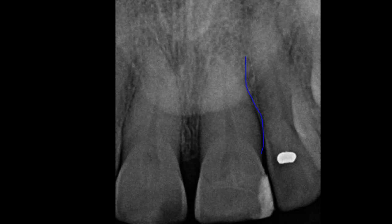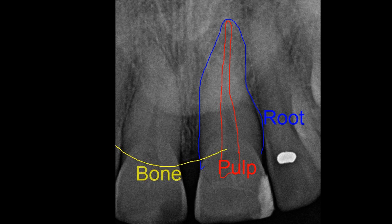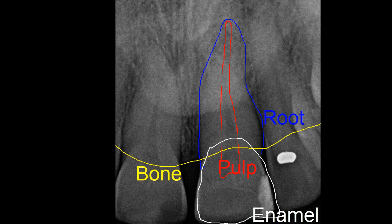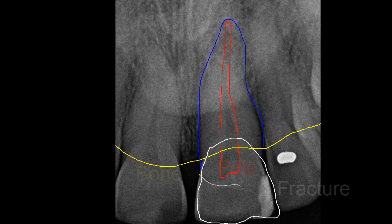In this more traditional x-ray, the outline of the root can be seen in blue. The pulpal tissue, which forms the tooth and is responsible for all of the hot and cold sensitivity, is indicated in red. The level of the bone and the gum is indicated in yellow, and the enamel — the portion of the tooth that you can actually see — is indicated in white.